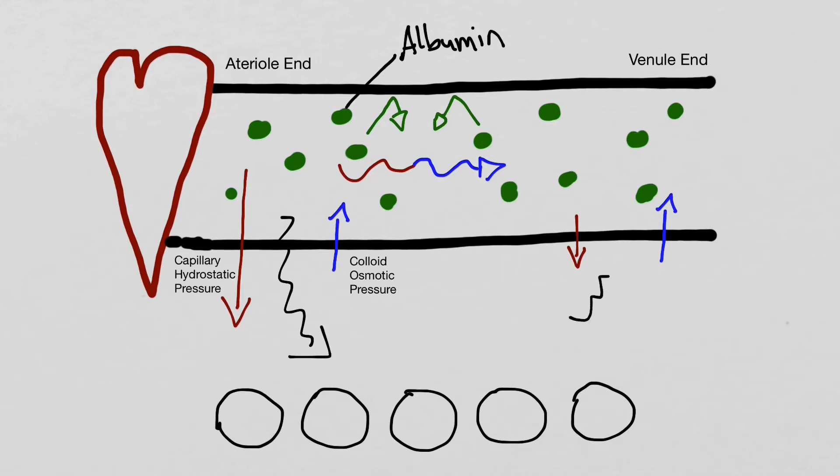At the venule end, the colloid osmotic pressure is larger than the capillary hydrostatic pressure, which creates a flow of fluid back into the capillary. The flow of fluid going out of the capillary at the arterial end is called filtration. The flow of fluid going back into the capillary at the venule end is called reabsorption.